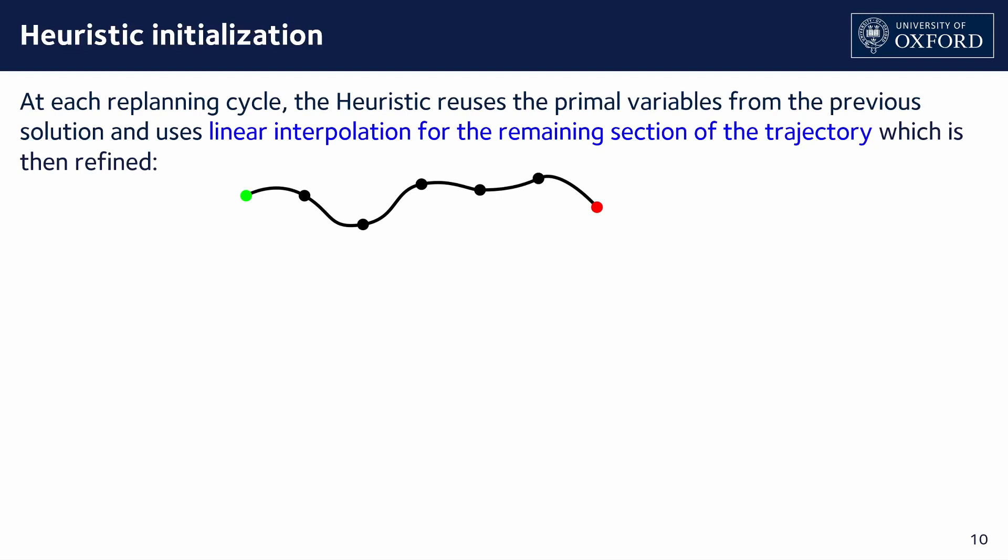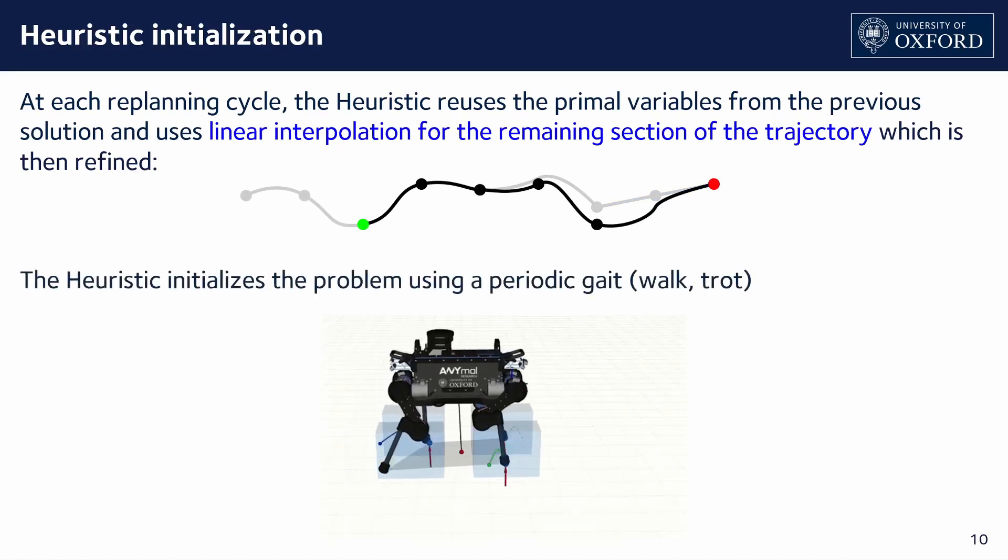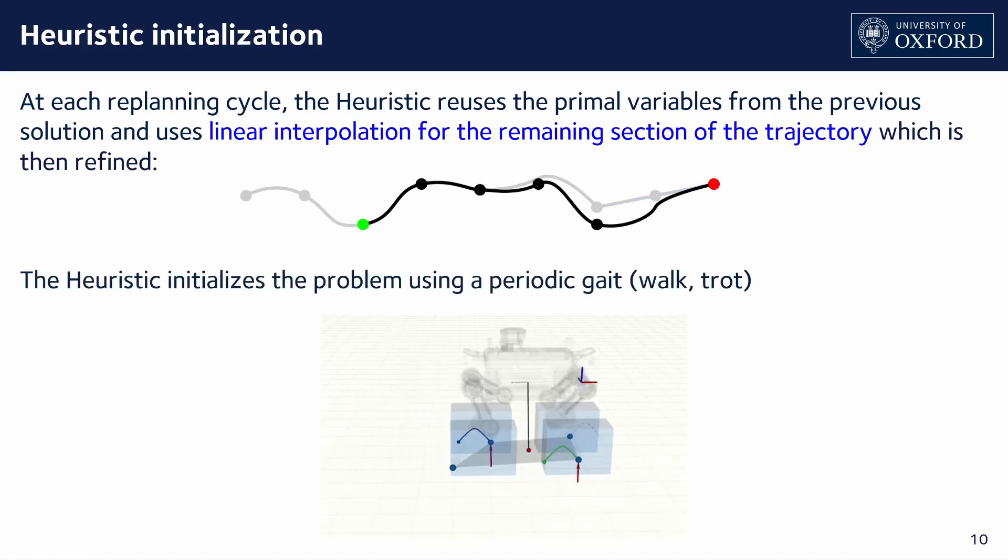First of our two proposed initialization schemes is the heuristic. When re-planning, it reuses the primal variables from the previous solution. The outstanding section of the trajectory is linearly interpolated to a user-defined goal. The trajectory is then refined. The heuristic initializes the problem using a predefined gait such as a trot.